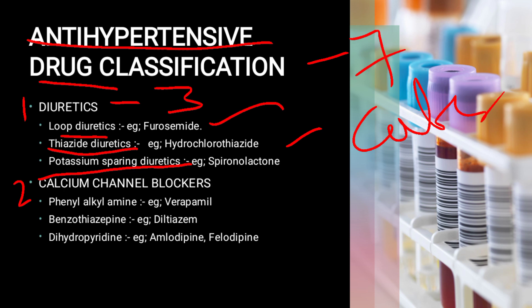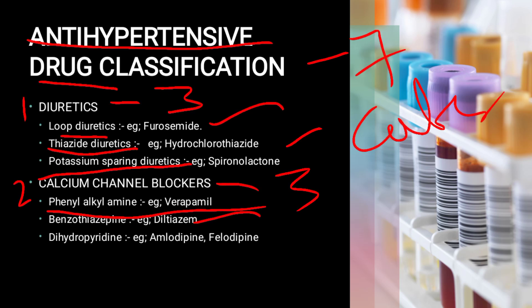Calcium channel blockers are classified into three categories: first, phenylalkylamine — example verapamil; second, benzothiazepine — example diltiazem; third, dihydropyridine — examples amlodipine, felodipine, and nifedipine.